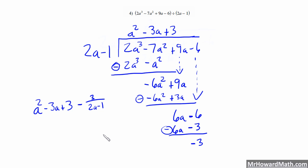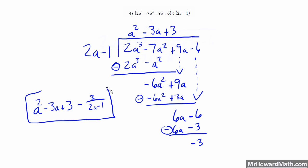So our final answer, instead of just being a squared minus 3a plus 3, is going to be a squared minus 3a plus 3 minus 3 over 2a minus 1. You take whatever your remainder is — we had negative 3 — and put it over this divisor. So our final answer is a squared minus 3a plus 3 minus 3 over 2a minus 1. You can even check that in your calculator using parentheses. That's it for this video. In the second video, I will use synthetic division to work the first three examples. I will see you in the next video.